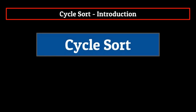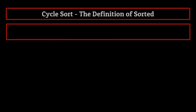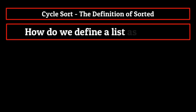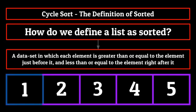Normally I jump straight into a definition, but today I'm not going to do that. We're first going to begin with a little thought experiment. How do we define a list as sorted? We can define a sorted list as a data set in which each element is greater than or equal to the element just before it, and less than or equal to the element right after it. This simple definition is something we've been working on this entire series, so it shouldn't be too much of a surprise.